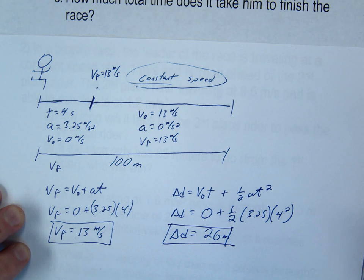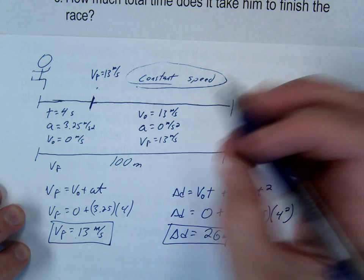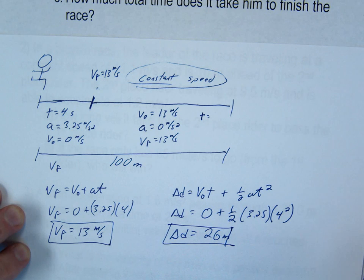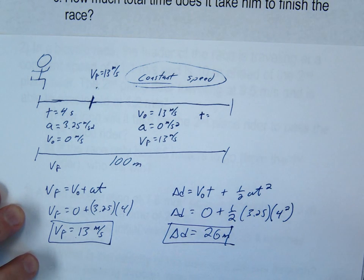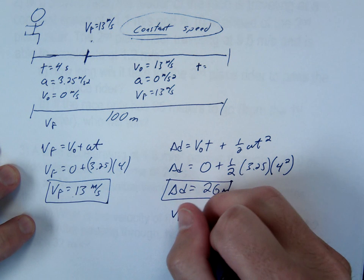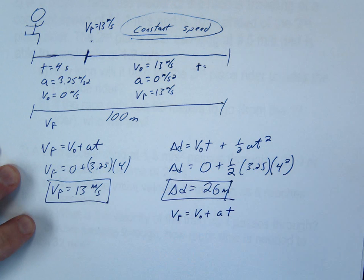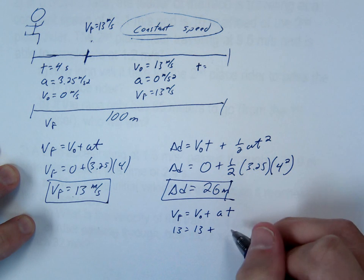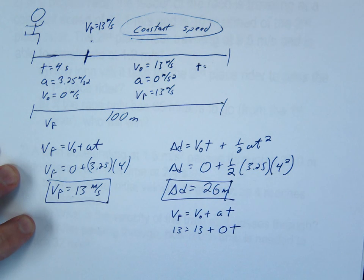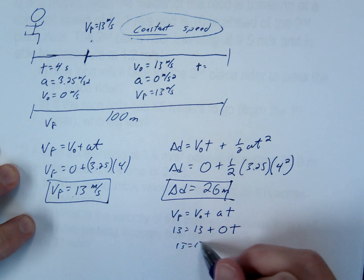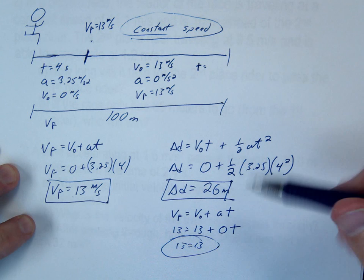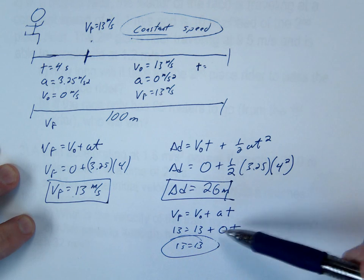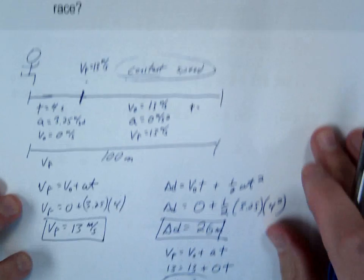What are we looking for? Time. We have three things. If you have three things, you can usually find the fourth. Does it work? Vf equals V₀ plus at. Vf is 13, V₀ is 13, a is 0. So 13 equals 13. Definitely a true statement, but it doesn't help us. This is one of those few times when something is 0 and cancels out what we want.